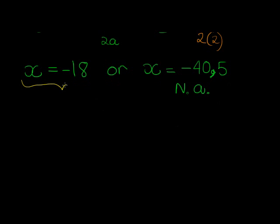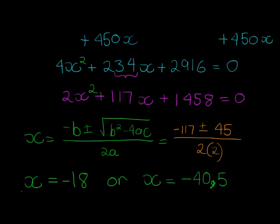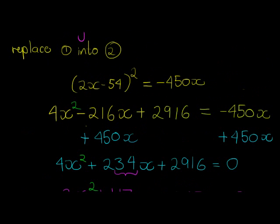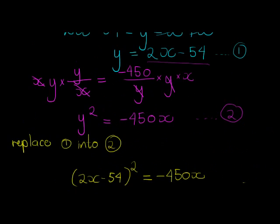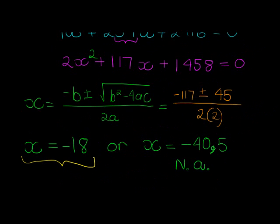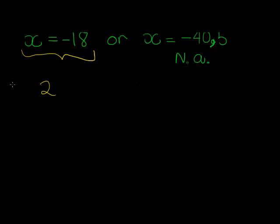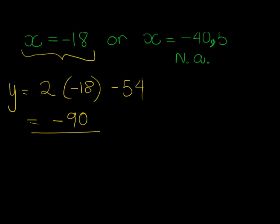Which means we have our x value. All we need to do now is find our y value. So let's just use the easiest equation we had, and that equation was this one. Y is equal to 2x which is -18 minus 54, which gives me -36 minus 54, which gives me -90.